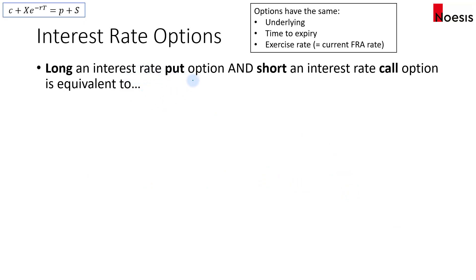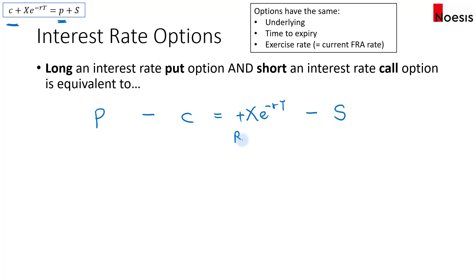Now what if you have a long interest rate put and a short interest rate call option? That would be equivalent to a long put and short call, which equals the risk-free bond minus the underlying. So in this case, plus means we receive fixed, and minus means we pay floating. So a long interest rate put and a short interest rate call option is equivalent to a receive fixed, pay floating FRA.